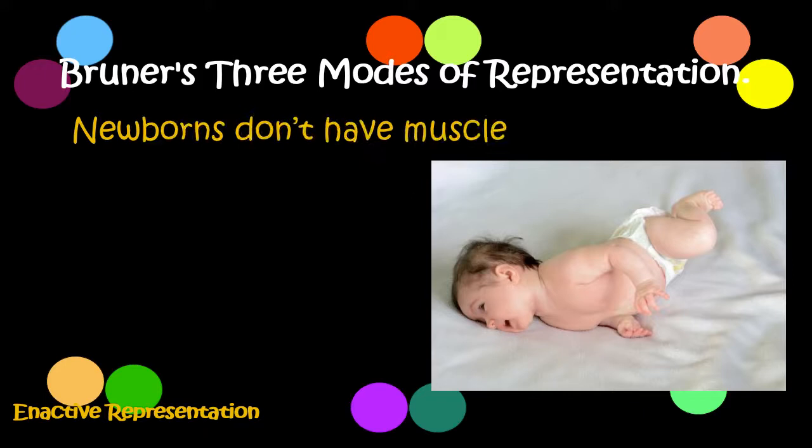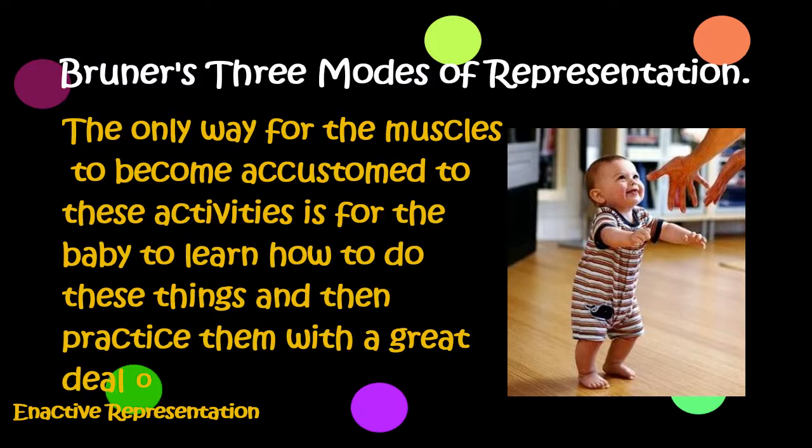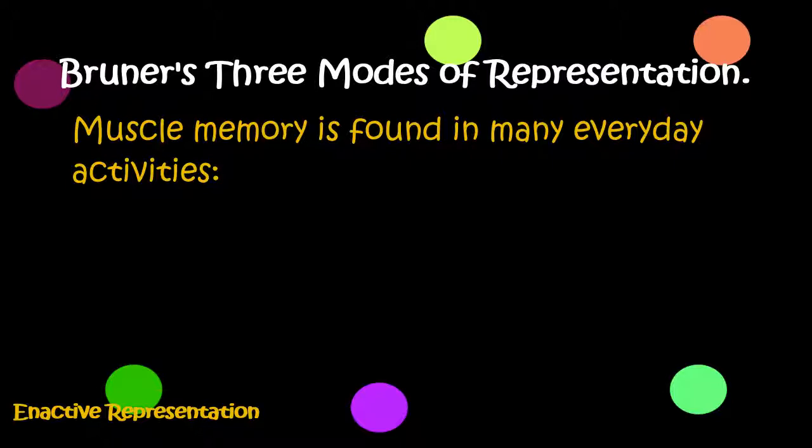The only way for the muscles to become accustomed to these activities is for the baby to learn how to do them and then practice with a great deal of trial and error. As the baby becomes a skilled walker, he falls less, is able to balance, and finally is able to incorporate other activities into his life such as running.